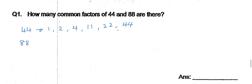For 88, we have 1, 2, 4, 8, 11, 22, 44, and 88. So common factors,